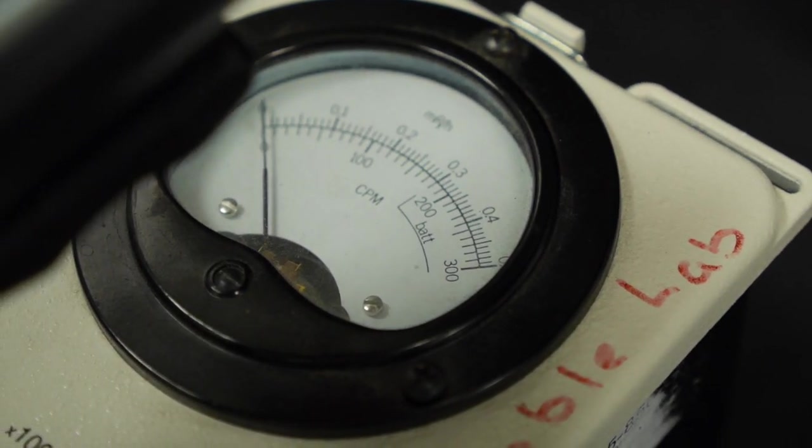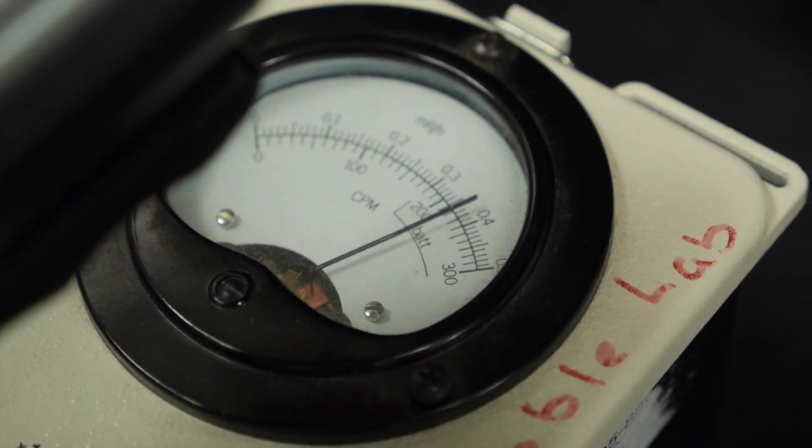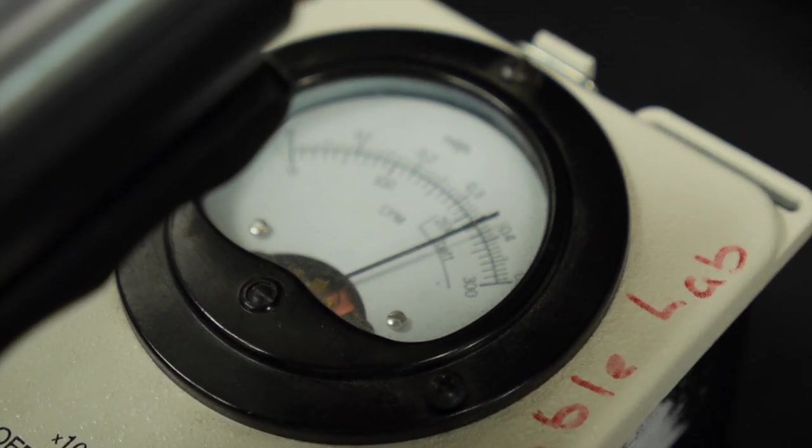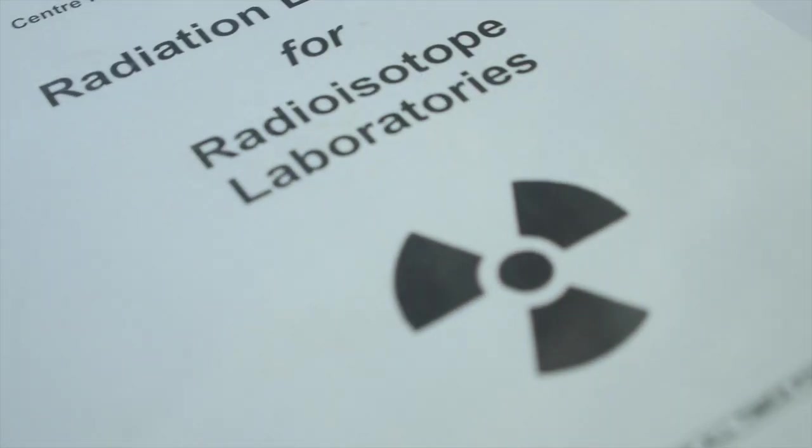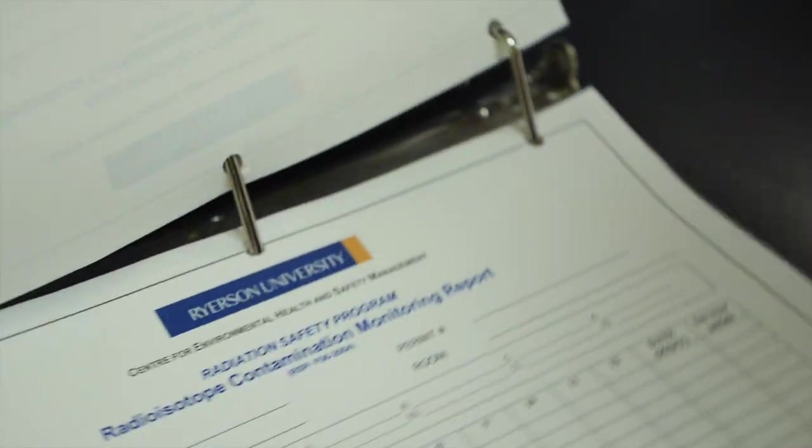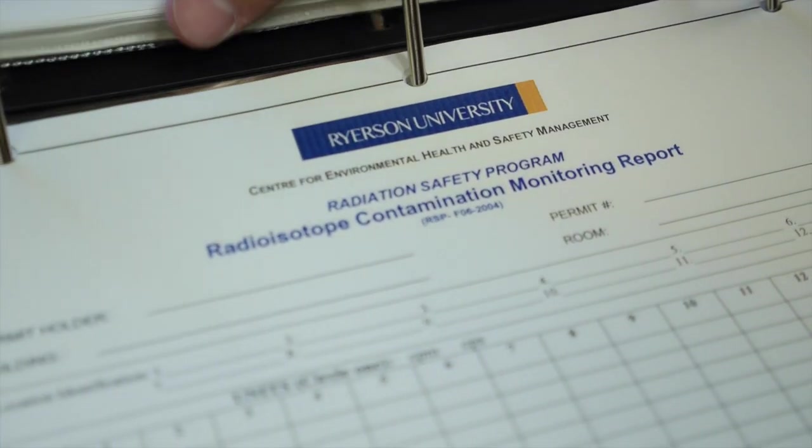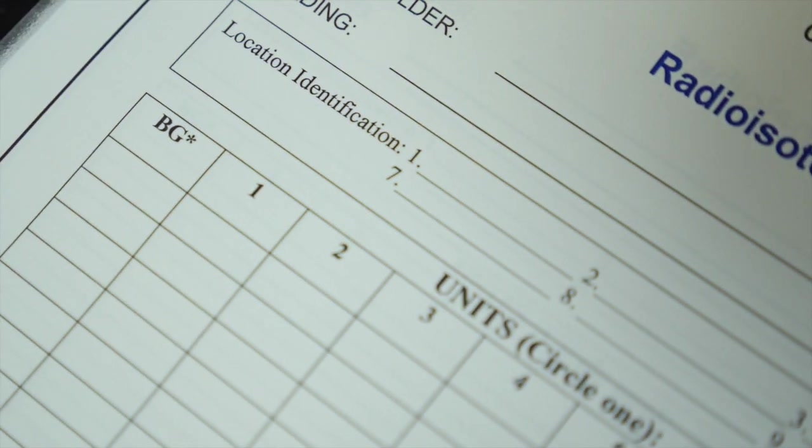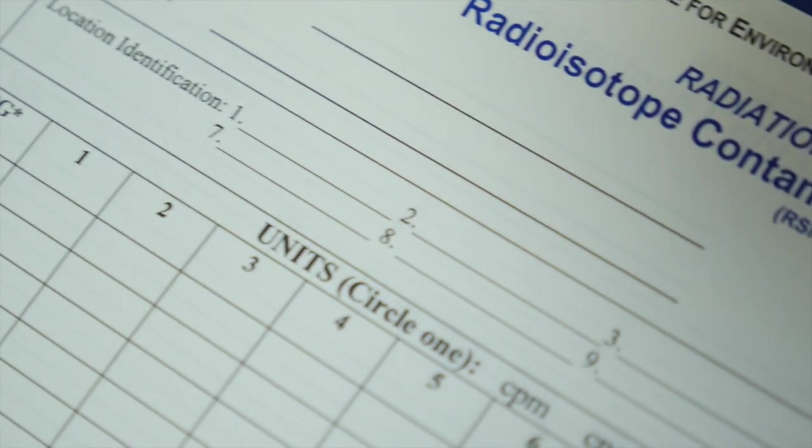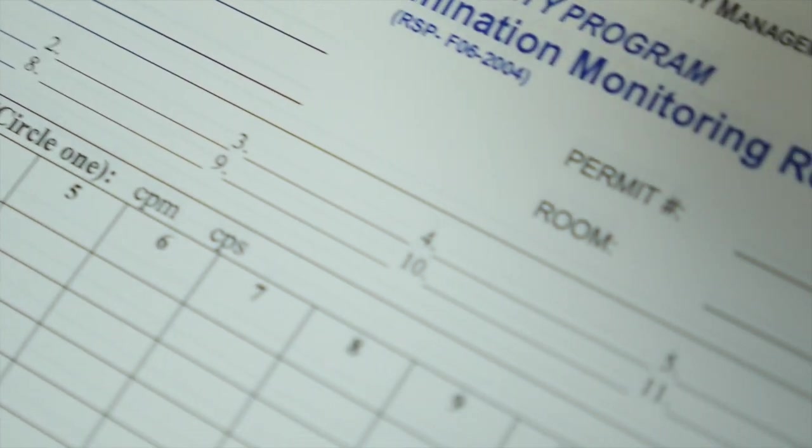Always confirm the values at these spikes and write down the measurements in the contamination monitoring sheet. It's important that you perform this monitoring procedure prior to any work with a radioactive source, as these readings will provide a baseline in the event of any spills or accidents.